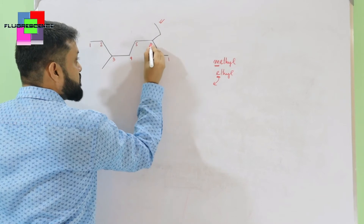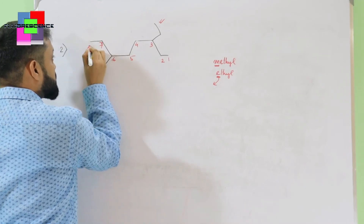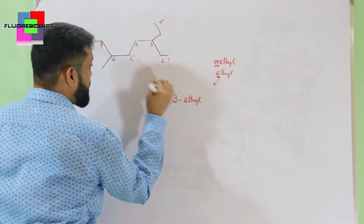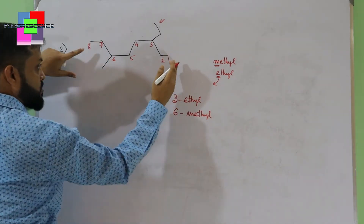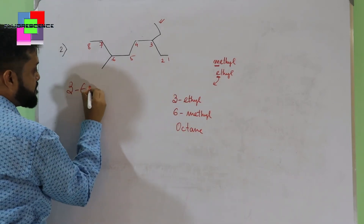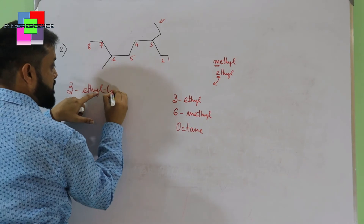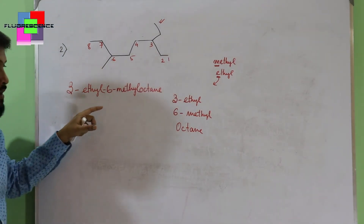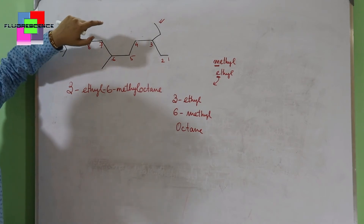Combining the parts: 3-ethyl at position 3, 6-methyl at position 6, and the base chain is octane. So the compound is 3-ethyl-6-methyloctane.